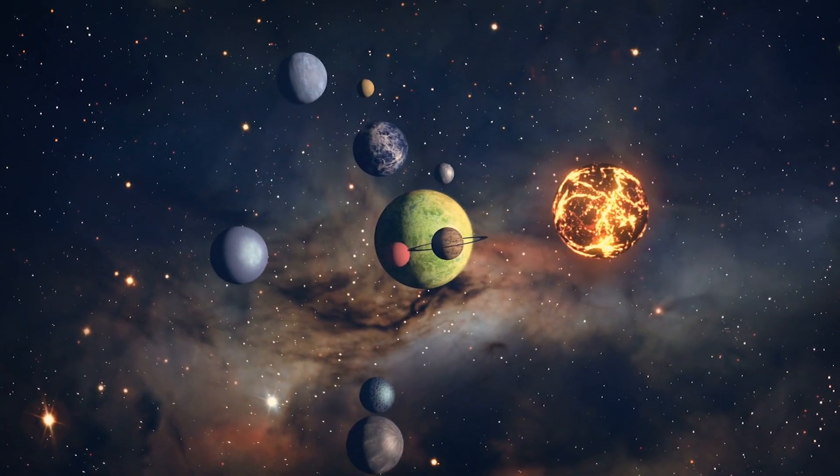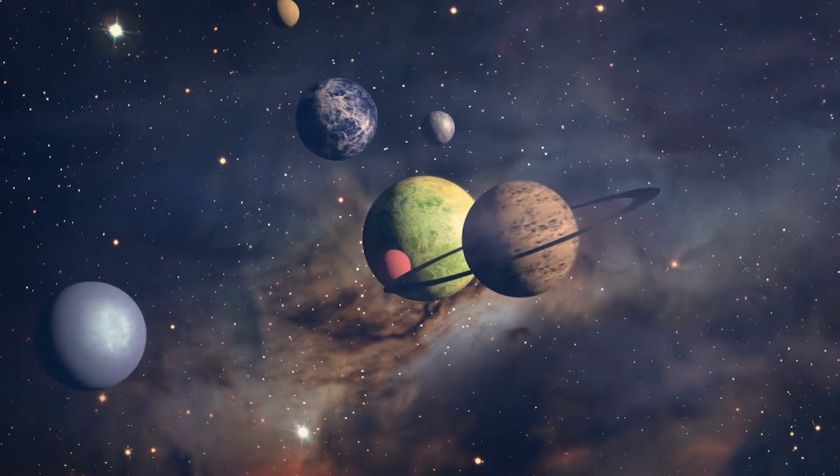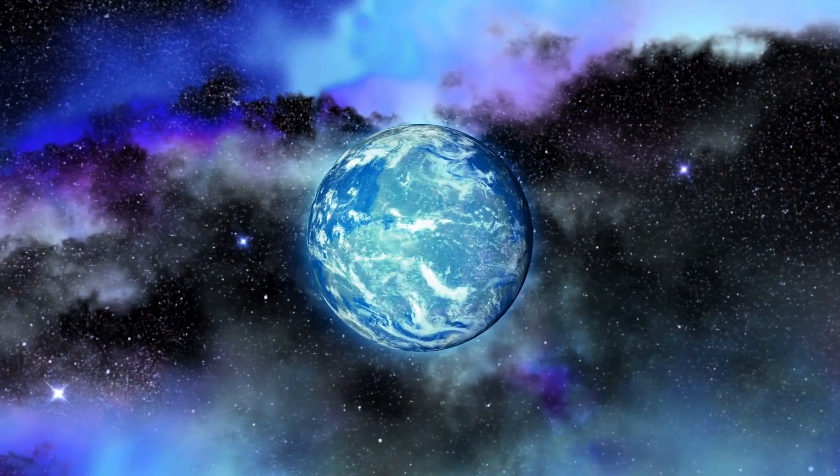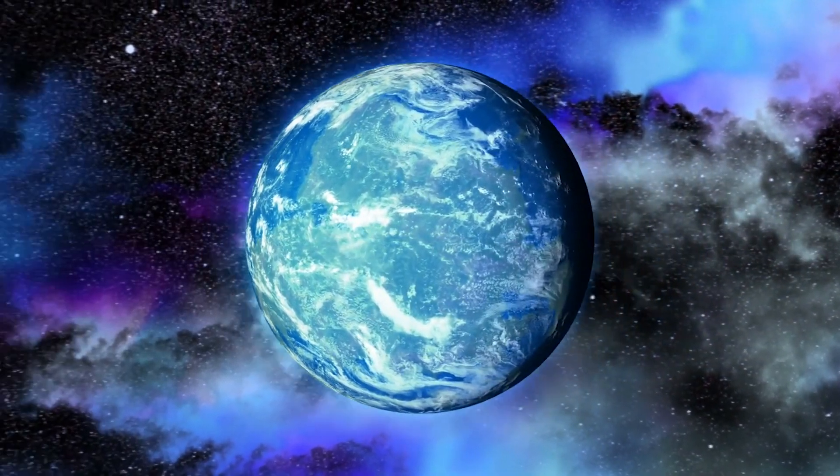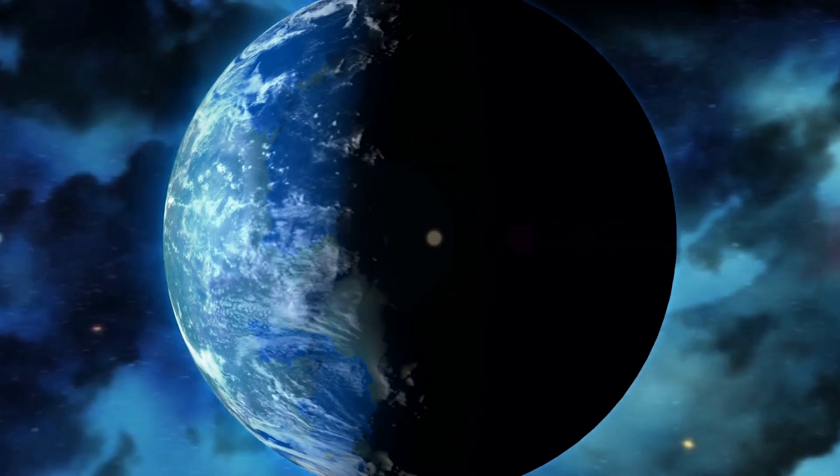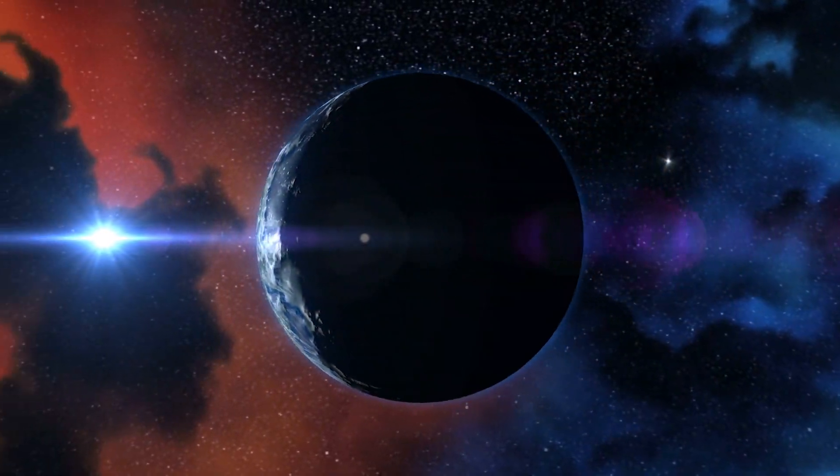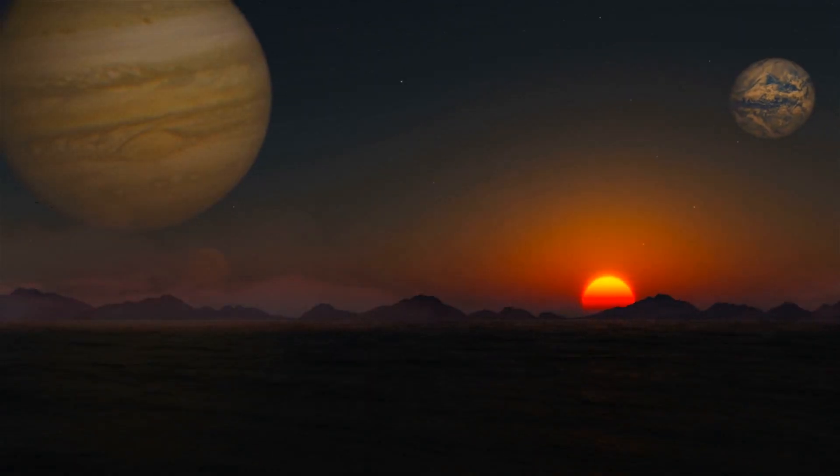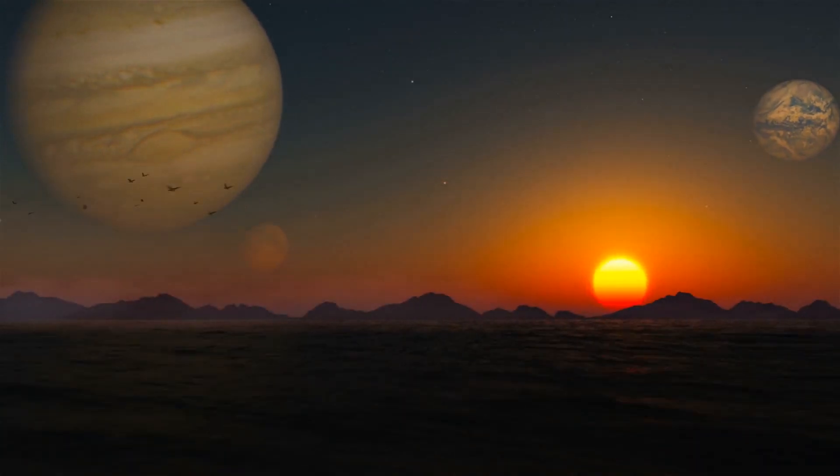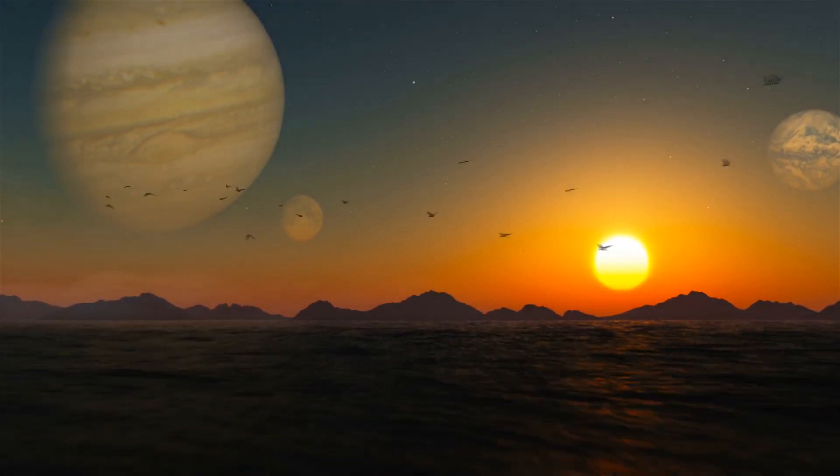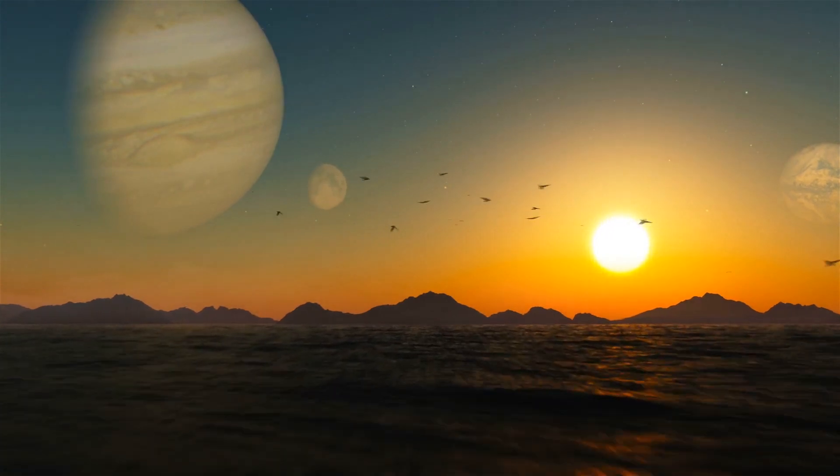So as of right now, there's only one true place that we know of where intelligent life exists, and that's our home planet. Or that's what we've been told to believe. Mankind's never-ending search for alien life doesn't seem to be coming to an end anytime soon. Until we know the true answer, it's important to come up with a few guesses before spending the time and money to investigate.